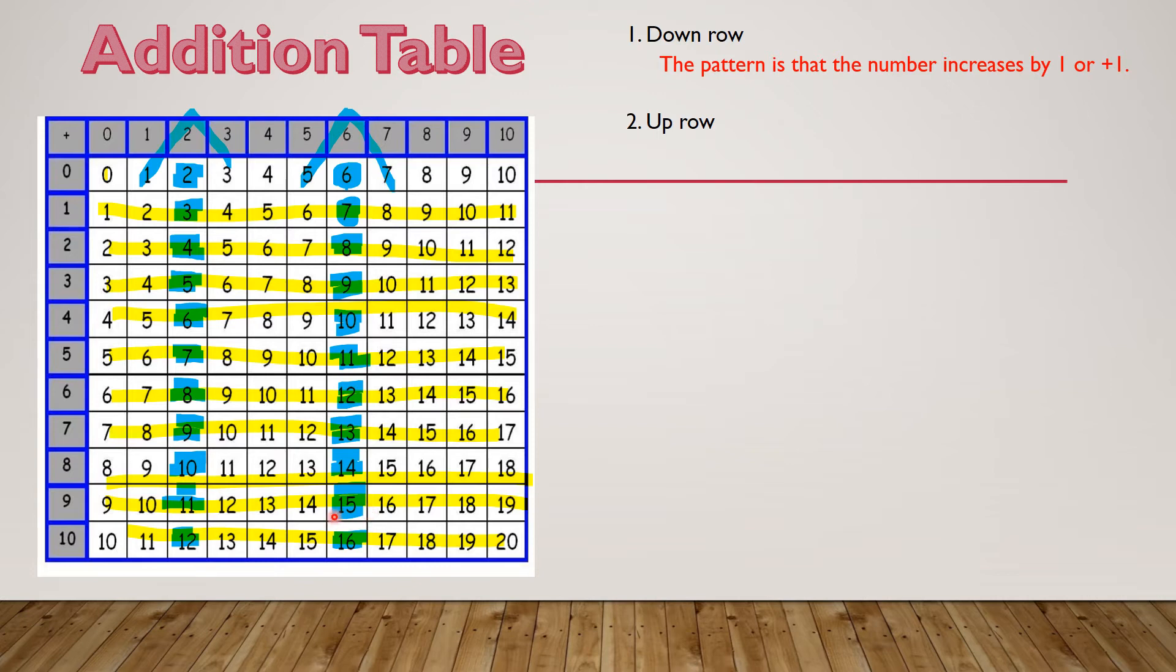So we're starting at 16, 15, 14, 13, 12, 11, 10, 9, 8, 7, 6. Well I see that we're decreasing by one but would it be the same if I started at 12 here? 12, 11, 10, 9, 8, 7, 6, 5, 4, 3, 2. And it is true. The pattern is that the number decreases by one.